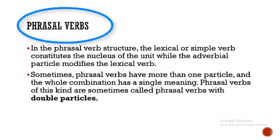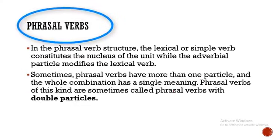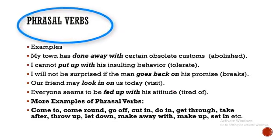Sometimes we could have what you call double particles — more than one element giving rise to a phrasal verb. For instance, 'done away with': 'away' is one particle, 'with' is another, and 'done' is the verb. 'Done away with' means to abolish. For example: 'My child has done away with obsolete customs,' meaning my child has abolished obsolete customs.